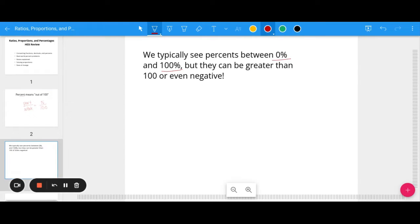When we talk about percents, we typically see them between zero and a hundred, but they can be greater than a hundred or even negative. For example, if a price increases by 20%, the new price is 120% of the original. If production of a company decreases by 45%, that would be represented by a negative 45% production rate.